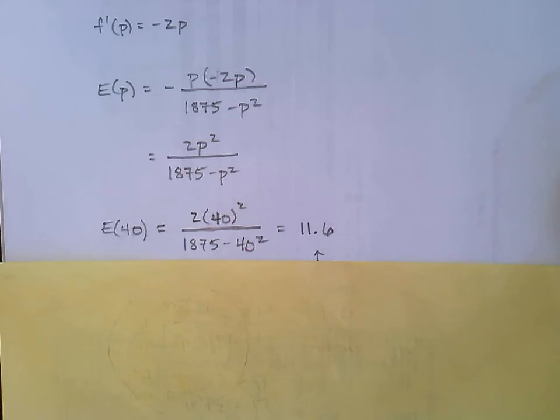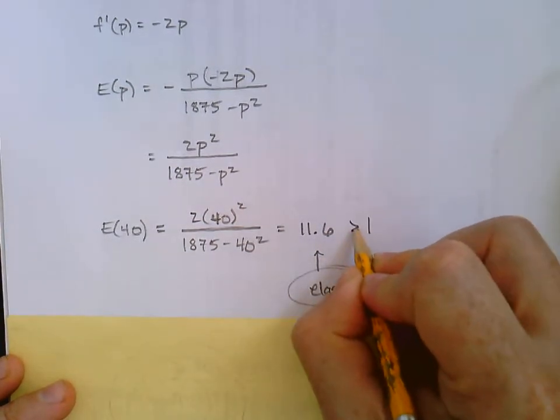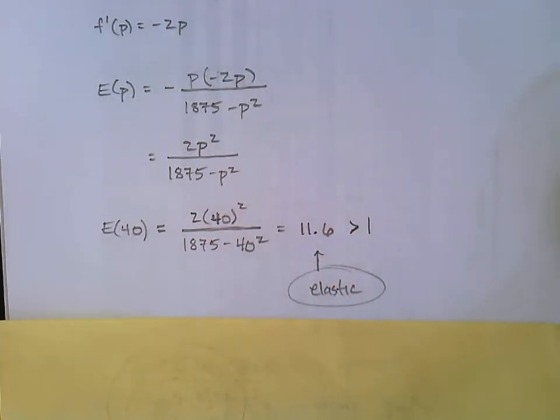That's been rounded to one decimal place. Just be aware of what the problem is asking. Let's round it to 11.6. That looks pretty good, that's plenty enough to answer the question. That's greater than 1, no matter how you round it. That number is bigger than 1, and that means demand is elastic.